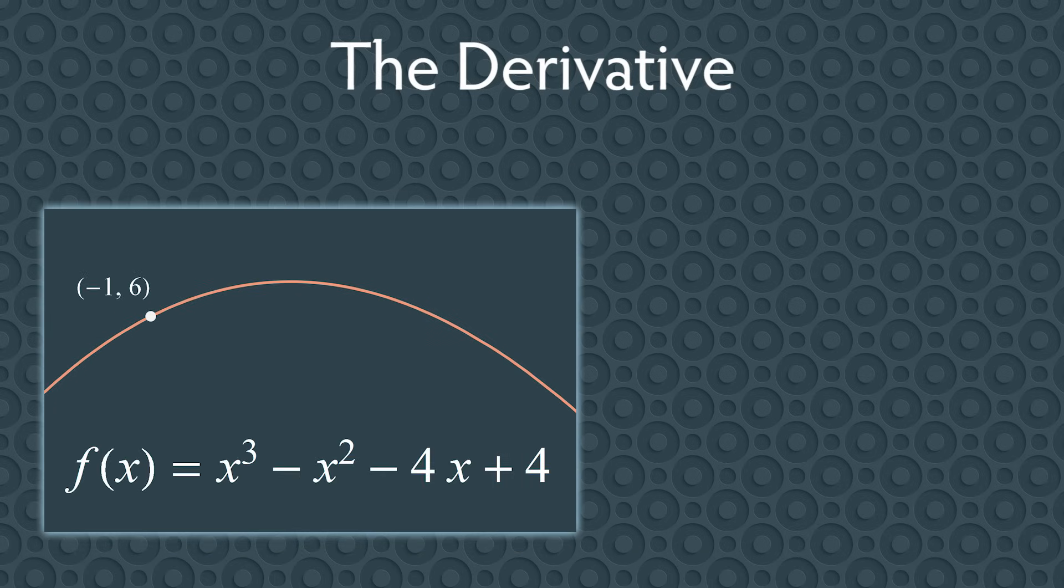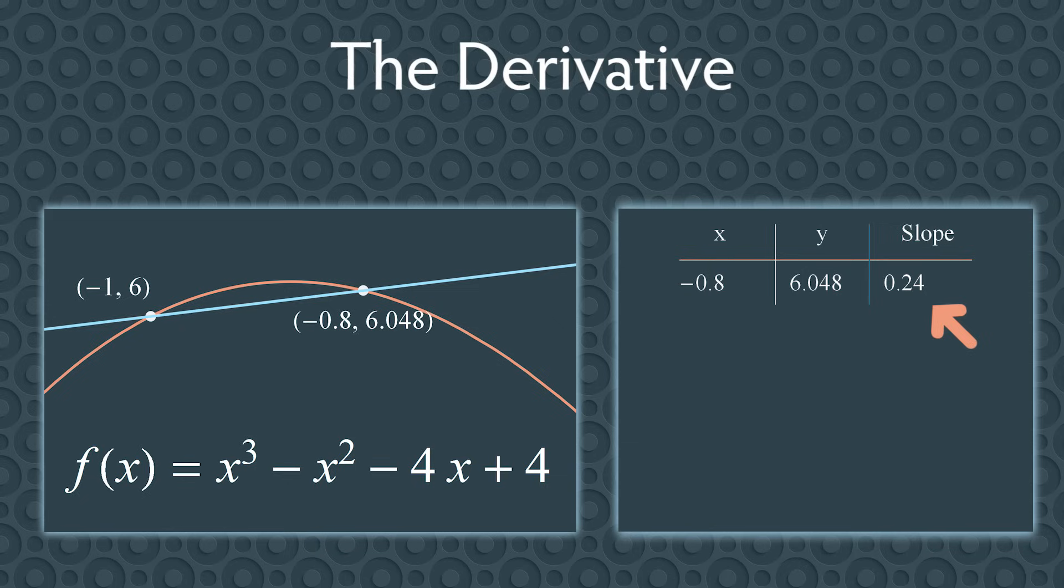Here's the idea. Pick a second point nearby. How about the point negative 0.8, 6.048? Next, draw a line through these two points. The slope of this line is a good approximation for the steepness of the curve at the point negative 1, 6. If you compute the slope, you get 0.24. This is a good approximation, but we can do better.